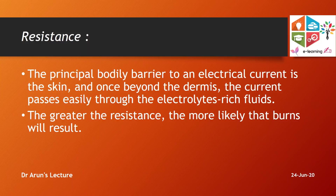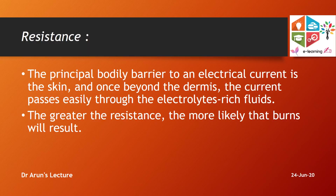Resistance offered by body barriers like skin and dermis is an important factor. Once electric current passes beyond these layers, it can easily flow through electron-rich fluid or the bloodstream. Greater resistance offered by the skin leads to more severe burns. Dry skin offers high resistance, while wet or moist skin offers decreased resistance. Blood also has low resistance. When high resistance is offered, secondary burning or thermal injury is more likely to occur.